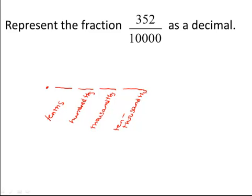Since we have 352 ten-thousandths, we need to make sure that our decimal uses four place values. We put our 352 in and then fill in with missing zeros. So as a decimal, we would have 0.0352.